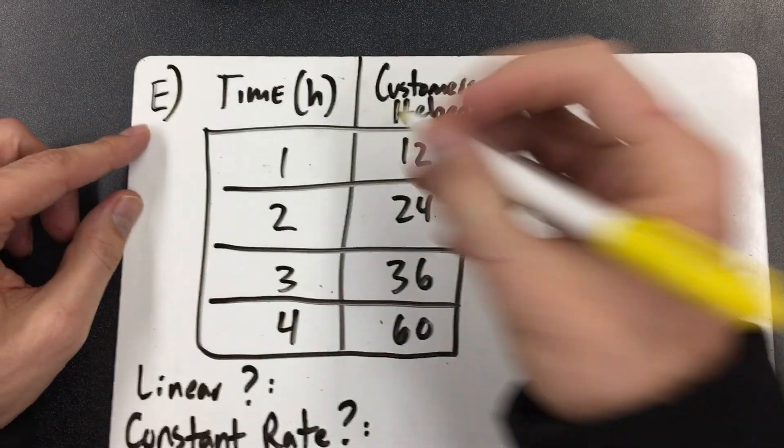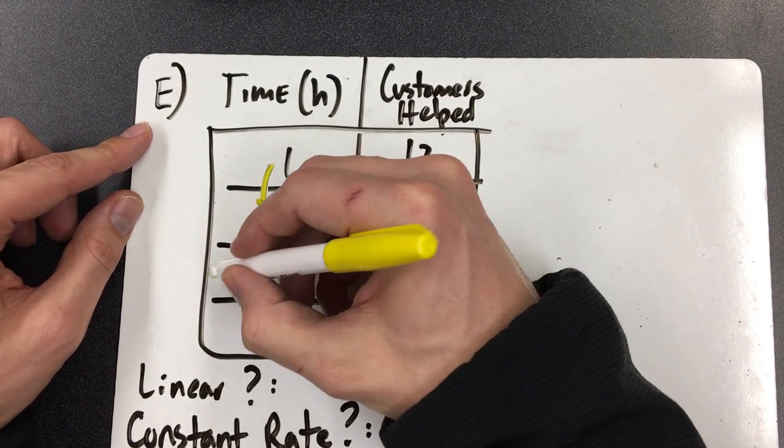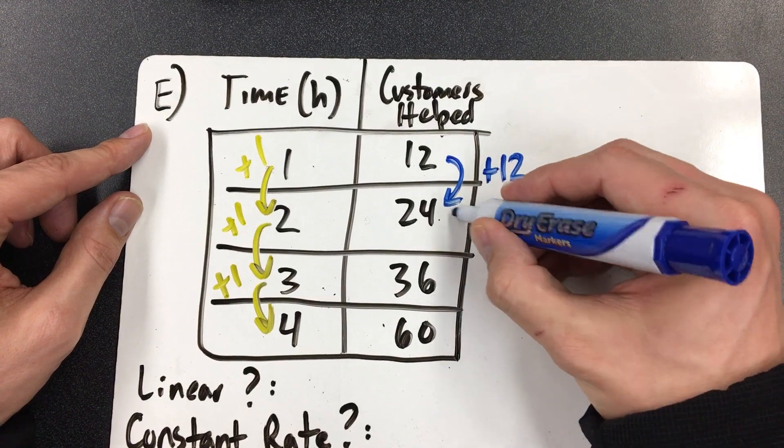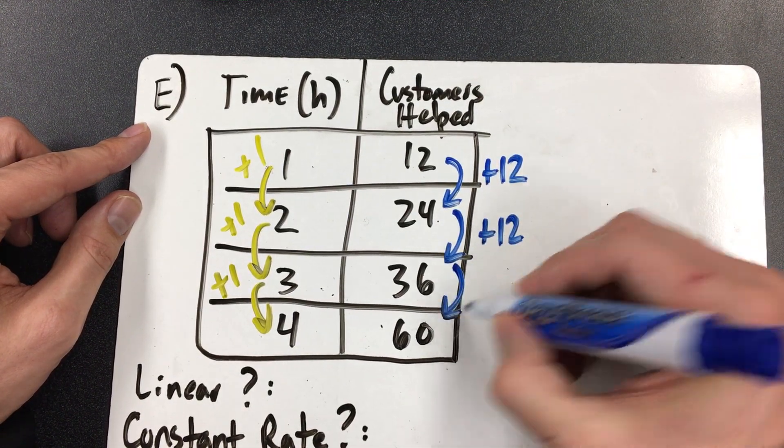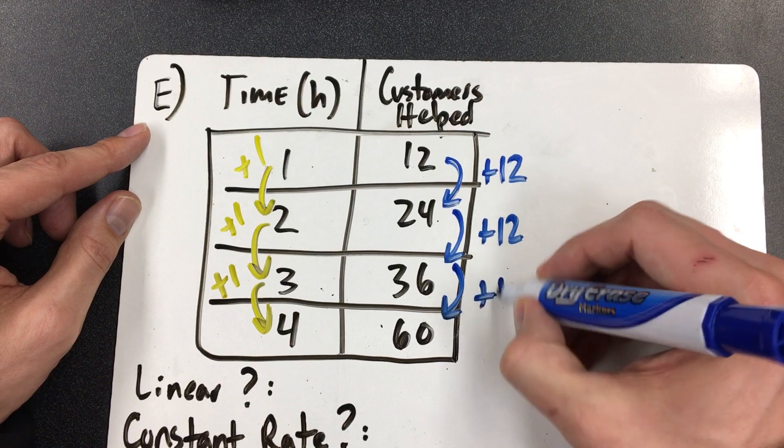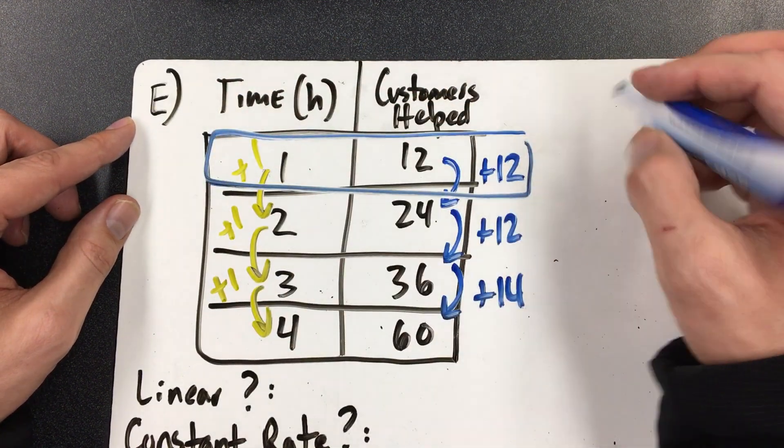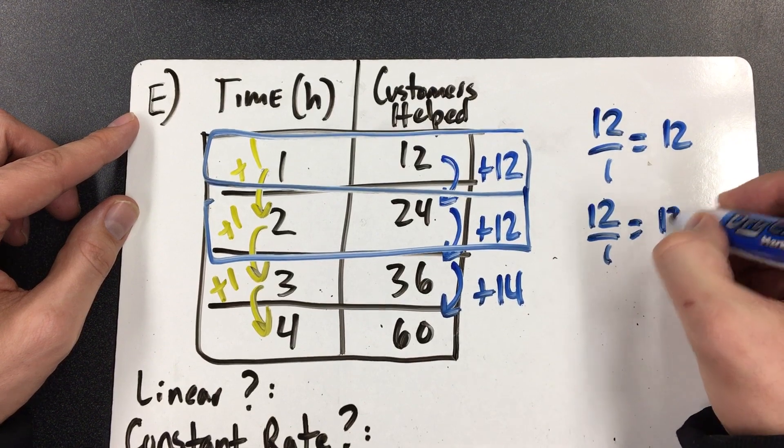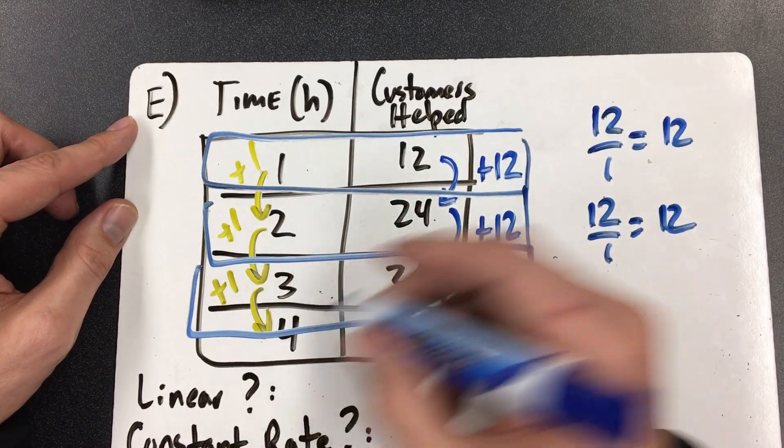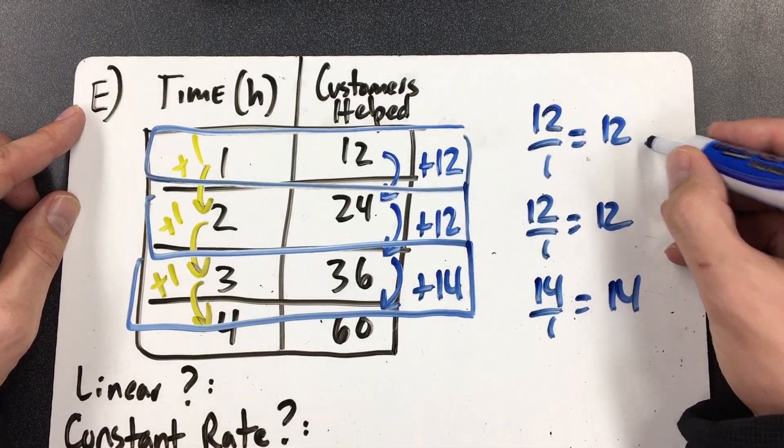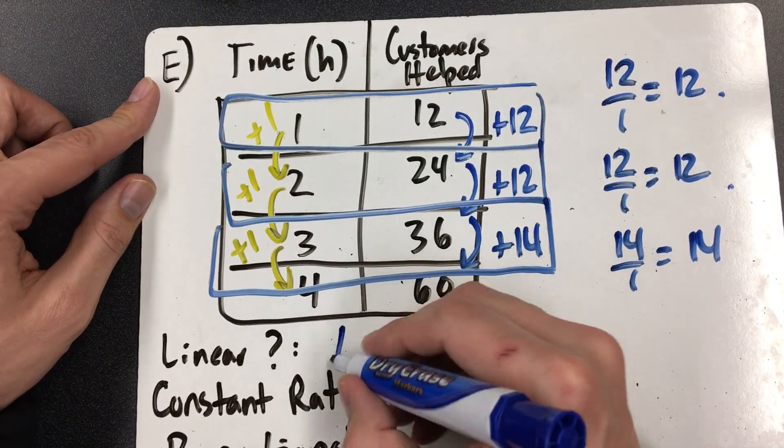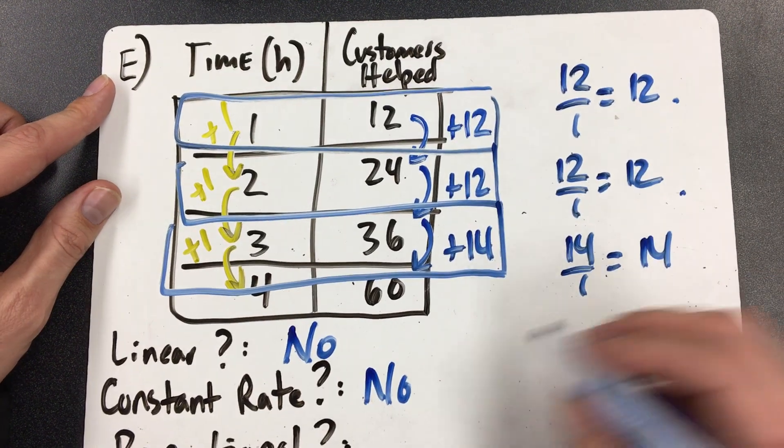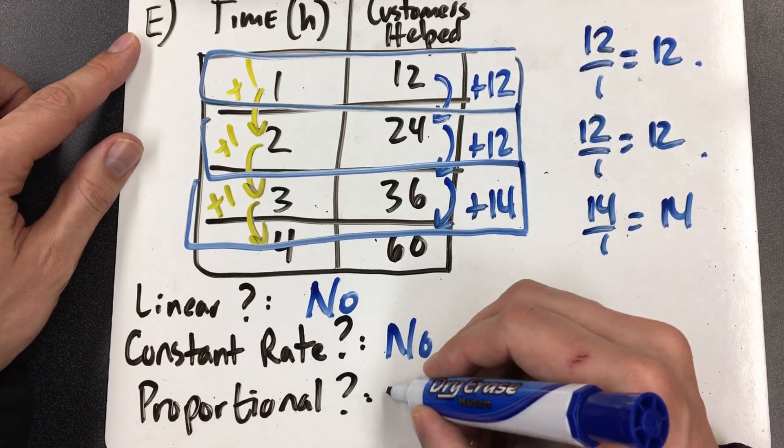Last one. Time. Over here is counting by 1s. 1, 2, 3, 4. Adding 1. If you look at the right-hand side, the number of customers you help at your store. Maybe you work at a jewelry store or a shoe store or something like that. 36 to 60 is plus 14. Look at this again, guys. Look what we have. 12 over 1. That one equals 12, so I'm feeling good. This one, 12 over 1. I'm feeling good. And then they snuck one in on us. Look at this. Mean. 14 over 1. Is that the same? No. Look. Good, good, bad. So, is this linear? No. It did not have a constant rate. In order for this to be constant, they all would have had to be 12, or they all would have had to have been 14. So, if it is not linear and it is not constant, it is not proportional either.